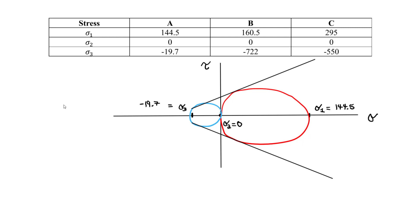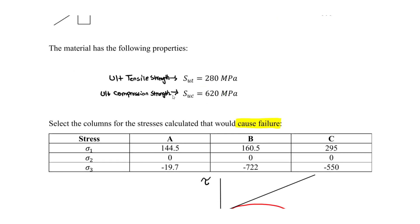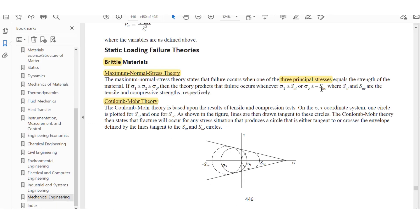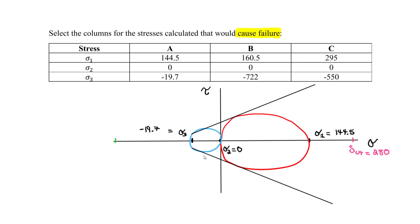The ultimate tensile strength is 280 MPa, plotted to the right of sigma 1 at 144. The ultimate compressive strength is 620 MPa — but careful, compression is negative, so it plots as negative 620 on the left side. If sigma 1 crosses the ultimate tensile value, or sigma 3 goes beyond negative 620, we have failure.